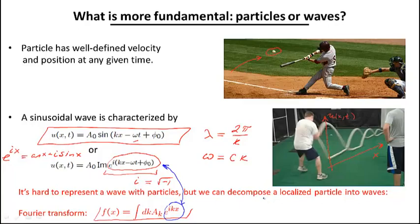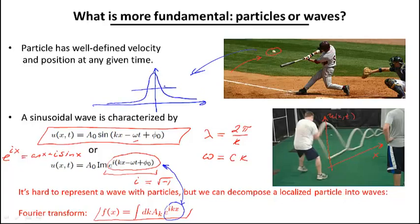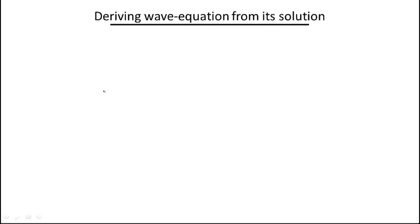In particular, we can consider a function f of x which has a very sharp peak with narrow width delta x around some location. We can represent this f of x in terms of these waves — this would be a decomposition of a particle-like entity into waves. Going back to quantum mechanics, we can resolve the dilemma presented by experiments which revealed wave-particle duality: how to describe our quantum mechanical objects, either as particles or waves. According to this discussion, it seems reasonable to describe quantum mechanical objects in a more general form, as waves.